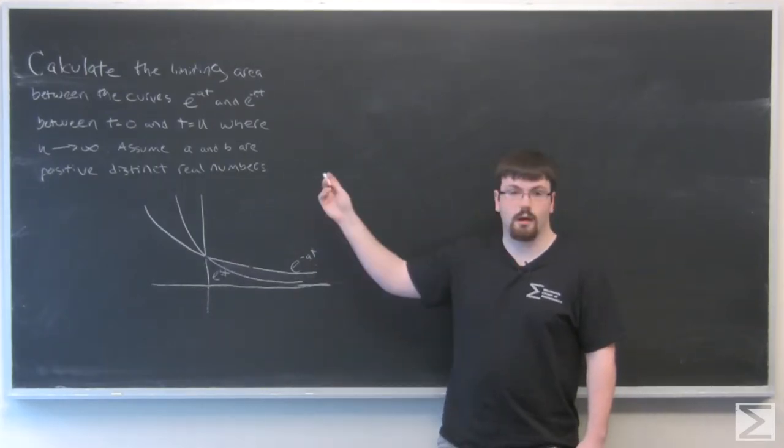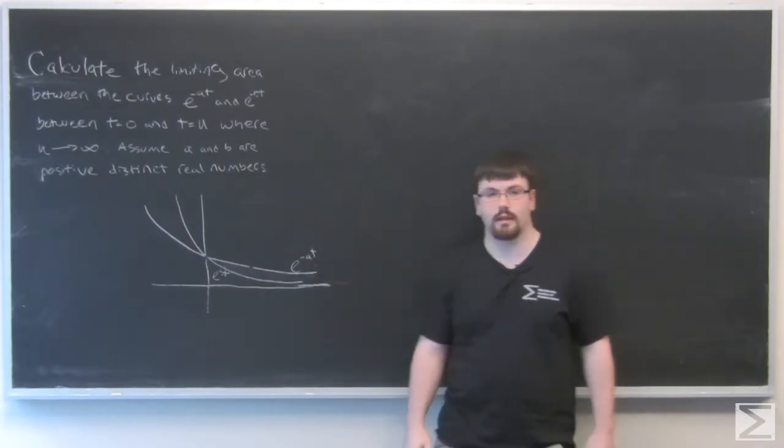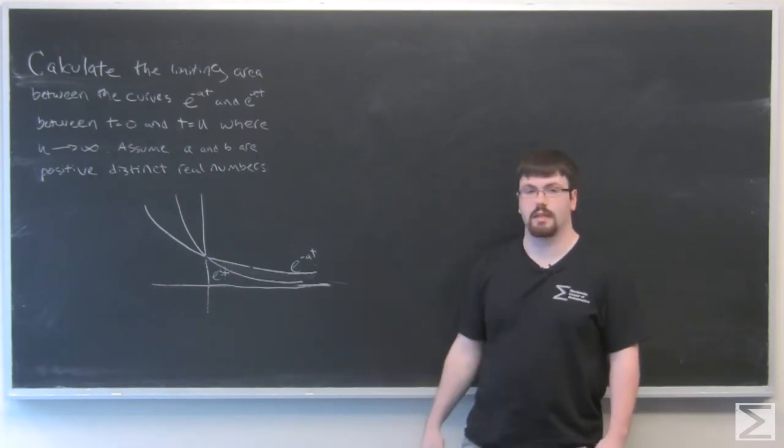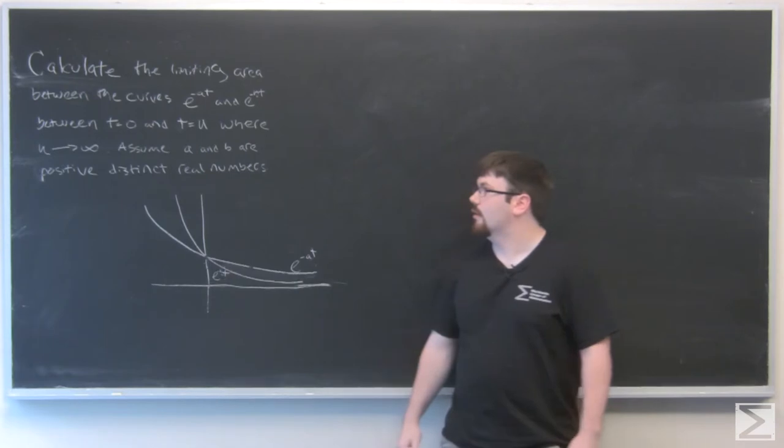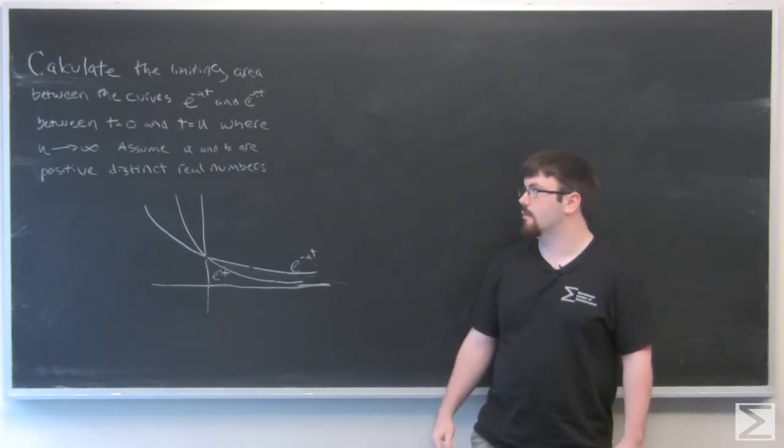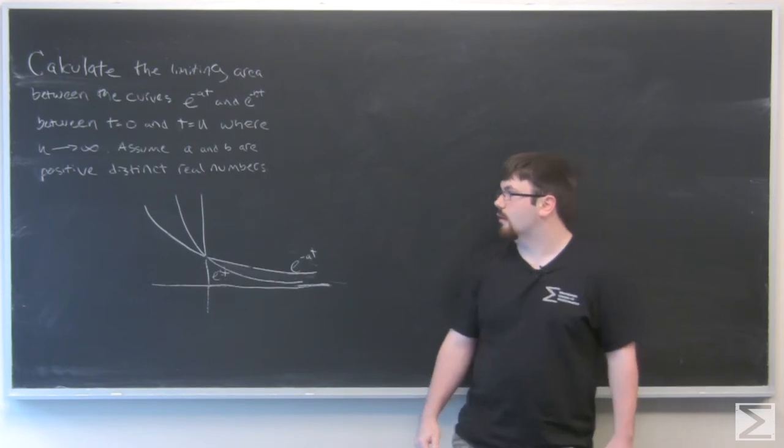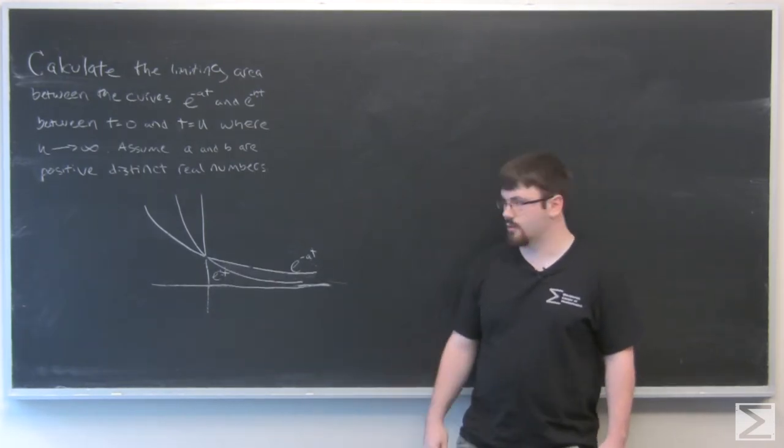All right, so this problem asks us to calculate the limiting area between the curves e to the negative at and e to the negative bt between t equals zero and t equals u as u approaches infinity. We're going to assume that a and b are positive distinct real numbers.